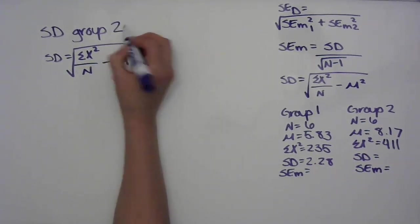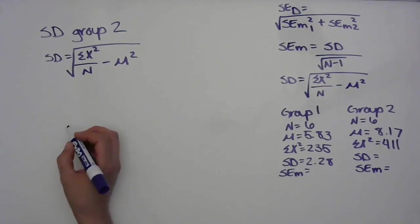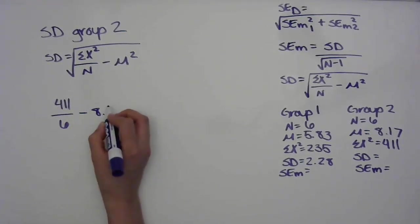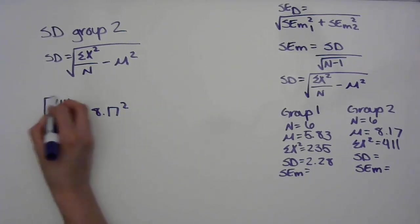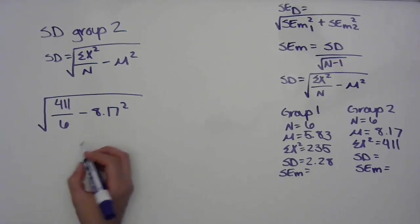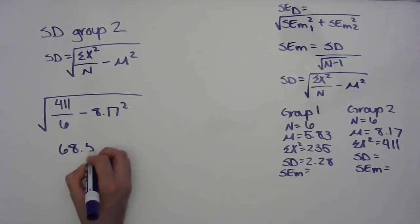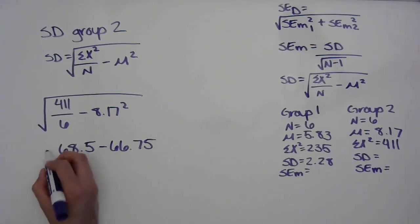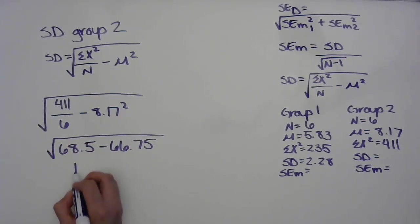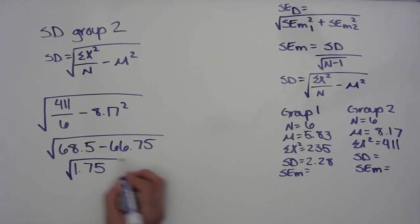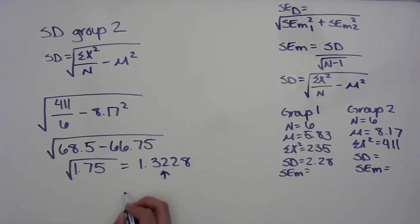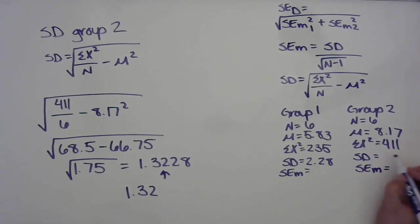Now let's find the standard deviation for group two. We have the x-squared value of 411 divided by 6, minus the mean of 8.17 squared. 411 divided by 6 gives us 68.5. 8.17 squared is 66.75. Subtracting those gives us 1.75, and the square root of that is 1.3228, which rounds to 1.32 as our standard deviation for group two.